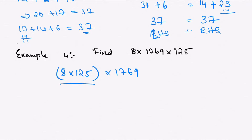Why am I grouping this? Because 125 is a multiple of 5, so it will be easy to calculate 8 × 125 first, and then multiply by 1769.